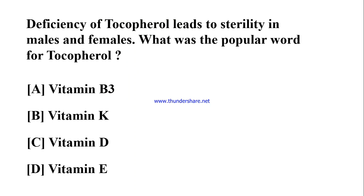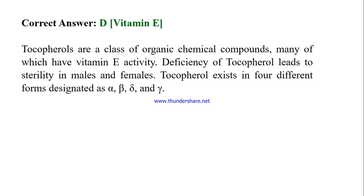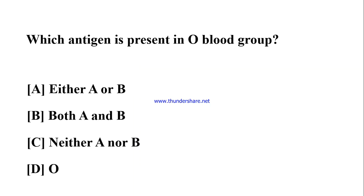Deficiency of tocopherol leads to sterility in males and females. What is the popular name for tocopherol? A) Vitamin B3, B) Vitamin K, C) Vitamin D, D) Vitamin E. Correct answer: D) Vitamin E. Tocopherols are a class of organic chemical compounds many of which have vitamin E activity. Deficiency of tocopherol leads to sterility in males and females. Tocopherol exists in four different forms: alpha, beta, delta, and gamma.